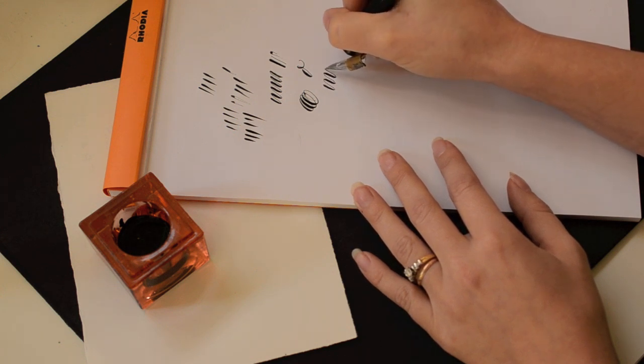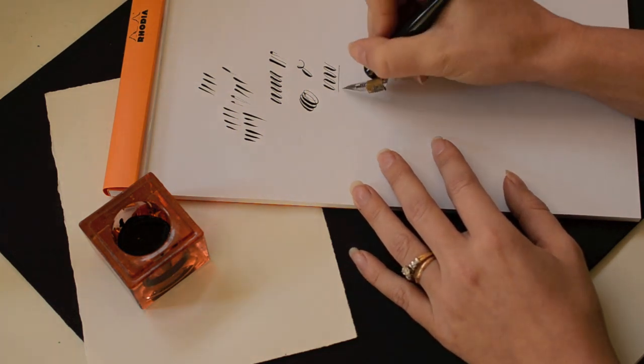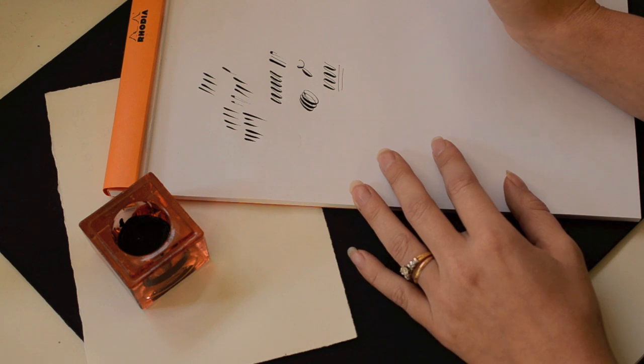Down is pressure, up is light. Down is pressure, up is light. This right here, basis of all the letter forms. Every last one of them.